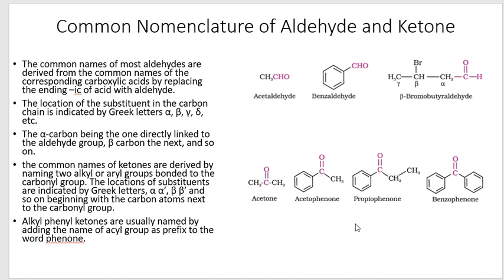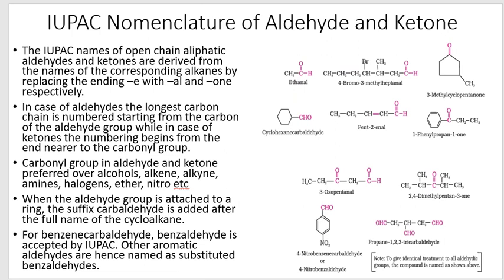Now we are on IUPAC nomenclature. All the standard IUPAC rules apply here, but the important point again is the priority order: for choosing the principal characteristic group, aldehydes and ketones are preferred over hydrocarbons, haloalkanes, alcohols, ethers, nitro compounds, and amines. While numbering, for aldehydes we always start numbering from the aldehyde carbon, giving it position 1. For ketones, we choose the nearest position for the ketone group.